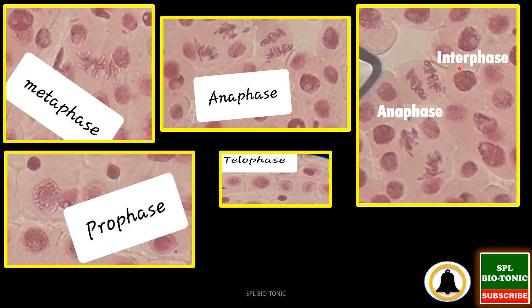So students, remember: chromatin is seen during interphase, chromatids are seen during anaphase, whereas chromosome is the term used during metaphase.